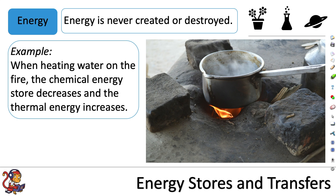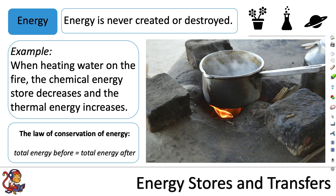For example, when heating water on the fire, the chemical energy store of the fuel decreases and the thermal energy store of the pan and the water inside the pan will increase. The law of conservation of energy says that total energy before must equal the total energy after.